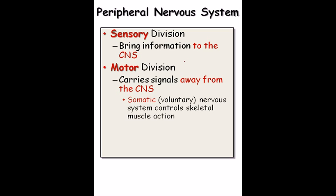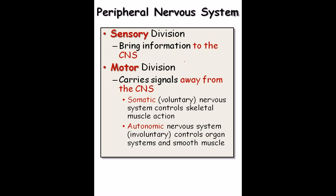The motor division is made of two different parts: the somatic division and the autonomic division. The somatic division controls voluntary activity — the nervous system controls skeletal muscle action, as we discussed with the reflex arc when a pin hits your hand or you put your hand on fire. The autonomic nervous system is involuntary — it controls organ systems inside the body where the muscles are mostly smooth muscles, which we cannot voluntarily regulate.